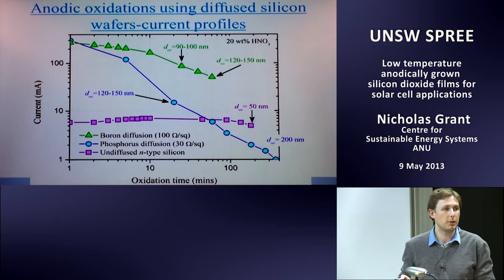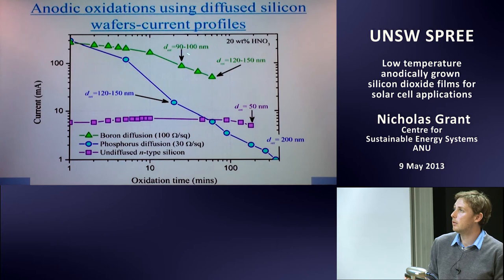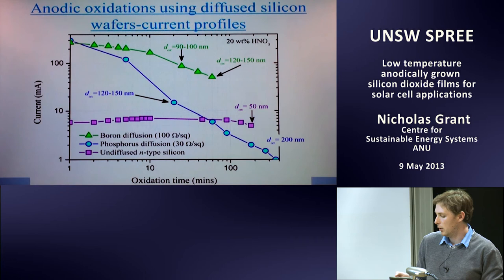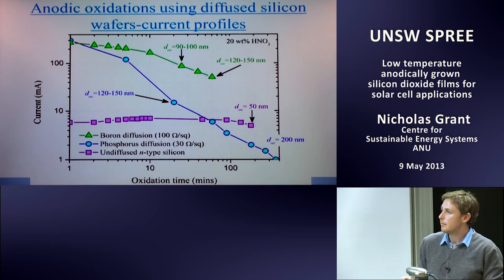Also interesting: oxides grow thicker much faster on diffused wafers. On phosphorus-diffused p-type samples, after about 20 minutes you already have around 150 nanometers — which is quite good, probably faster than a thermal wet oxidation. For boron-diffused samples, about 100 nanometers after 20 minutes — acceptable and quite good. However, leaving samples for hours only adds around 50 more nanometers — so the growth rate slows down significantly after the initial rapid phase.